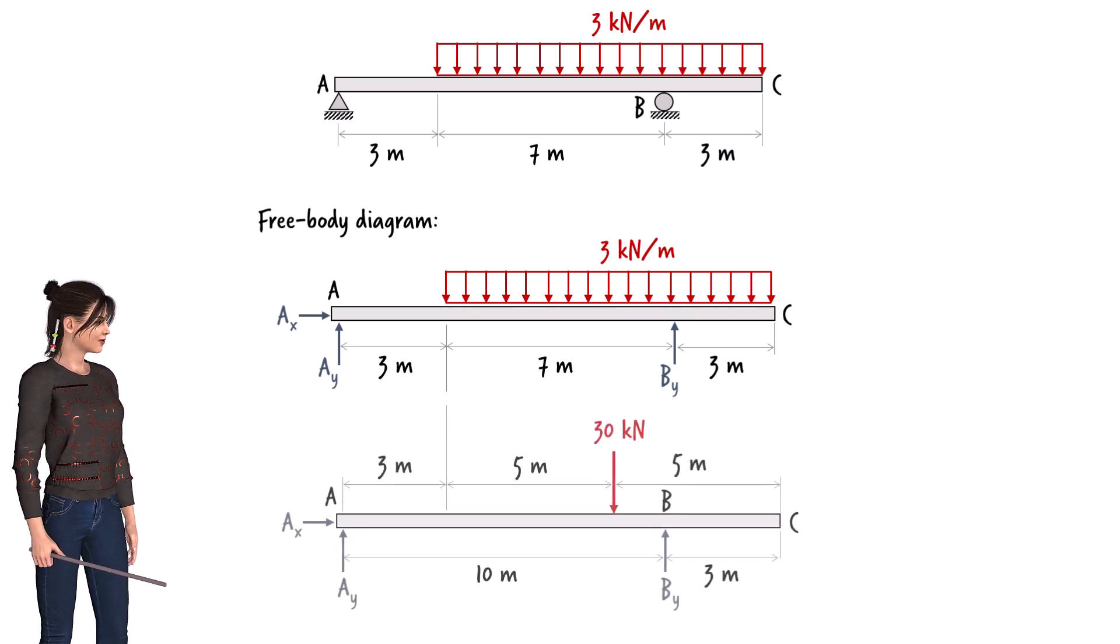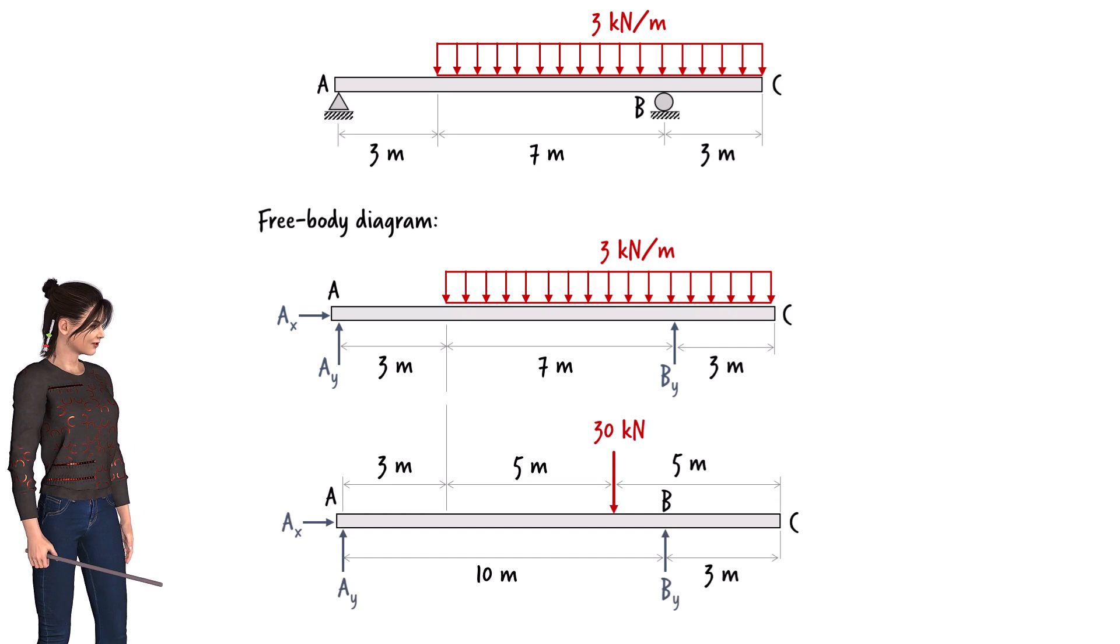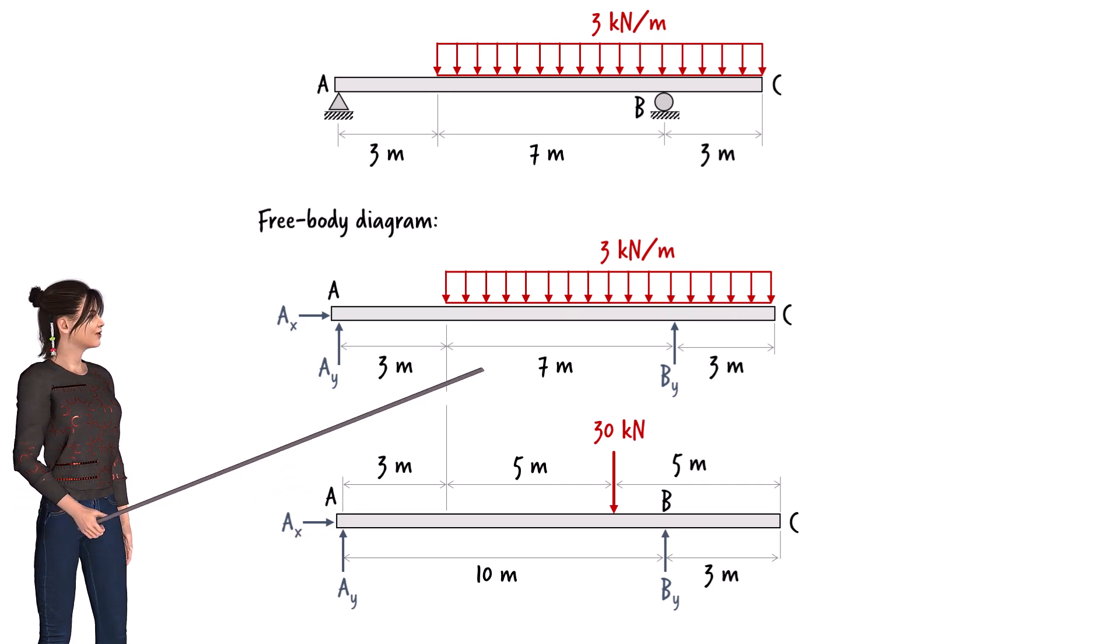We can replace the distributed load with its equivalent concentrated load. This change makes it easier to write the equilibrium equations. The magnitude of the equivalent concentrated load is equal to the area of this rectangle.